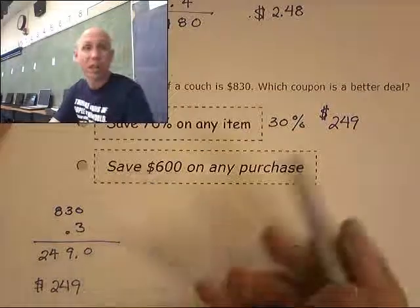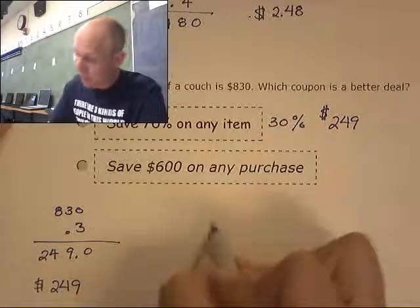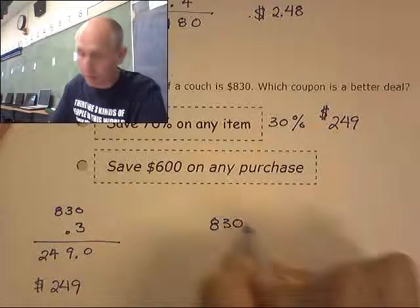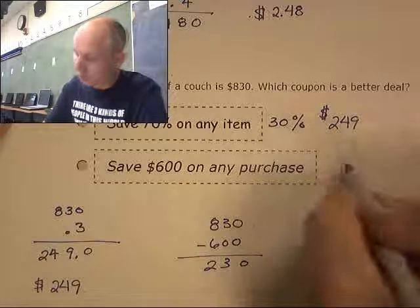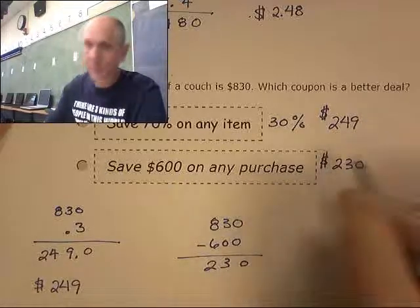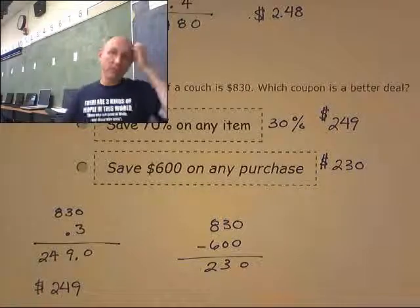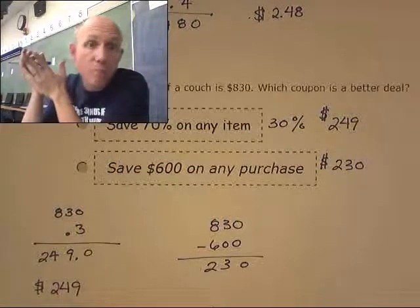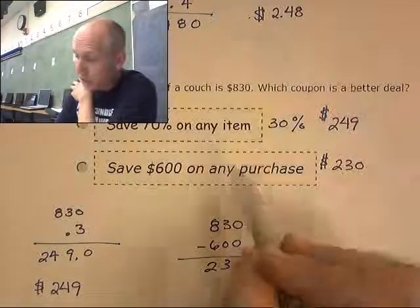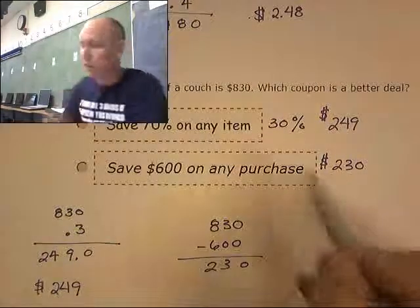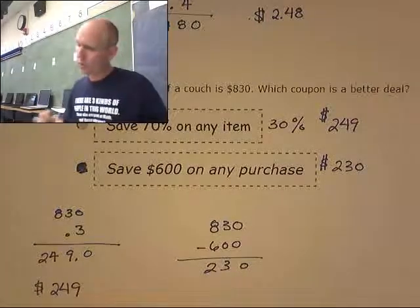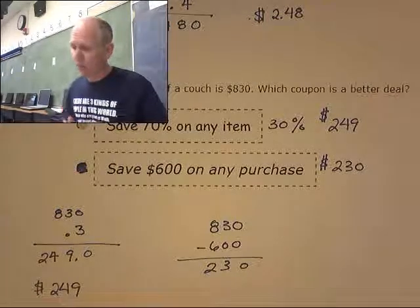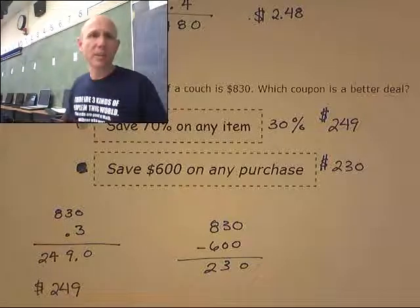What if I just take $600 off the price? Is that a better deal? $830 minus $600 gives me $230. So which one should I use? Should I use the 70%-off coupon and pay $249, or take $600 off and pay $230? The $600-off coupon is the better deal — that's the bargain! Two thirty for a couch seems like a really good price.